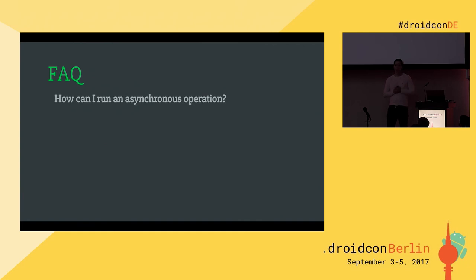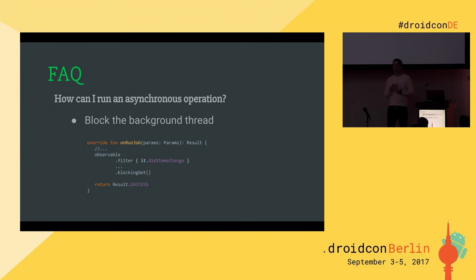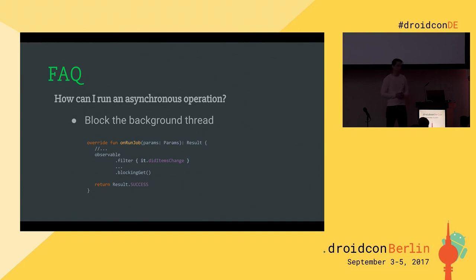How can I run an asynchronous operation? The `onRunJob` method is already called on a background thread. So if this method returns, the library thinks you're done. If you're doing something else in the background, simply block this thread and wait until your background operation is done. When it's done, return the result, and then the library will release the wake lock and the system will stop the application if it needs to.